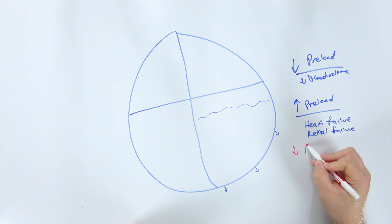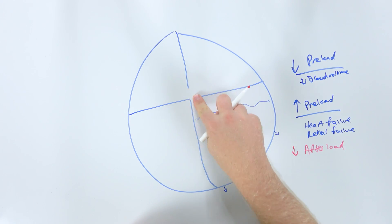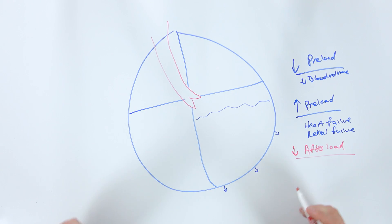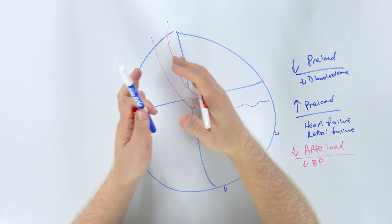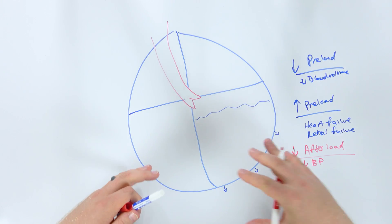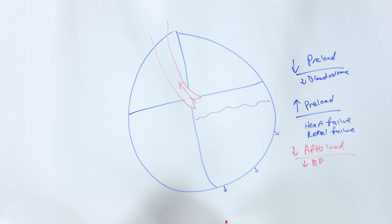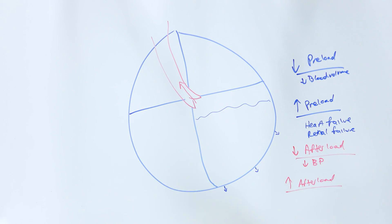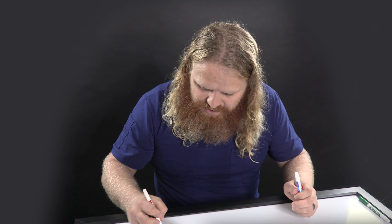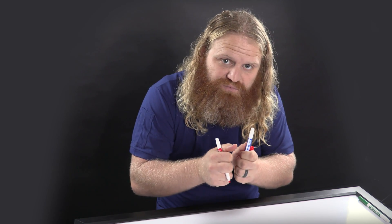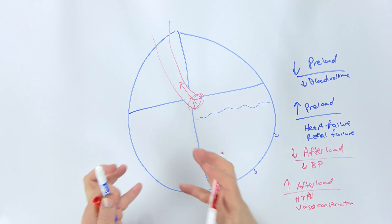What's going to decrease afterload — the resistance we have to overcome? Think of things like low blood pressure, where the vessels aren't squeezing as tight and are a little more loose, decreasing the resistance we have to overcome to open that valve. What's going to increase afterload? Think about hypertension or vasoconstriction — these vessels are tight and rigid, so we've got to overcome more resistance and create more pressure to get that open.